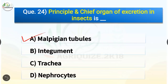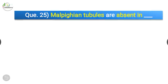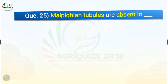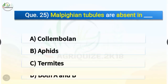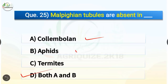Question number 25. Malpighian tubules are absent in which insects? The options are Collembola, aphids, termites, or both A and B. The correct answer is option D, both A and B. Malpighian tubules are absent in Collembola and aphids.